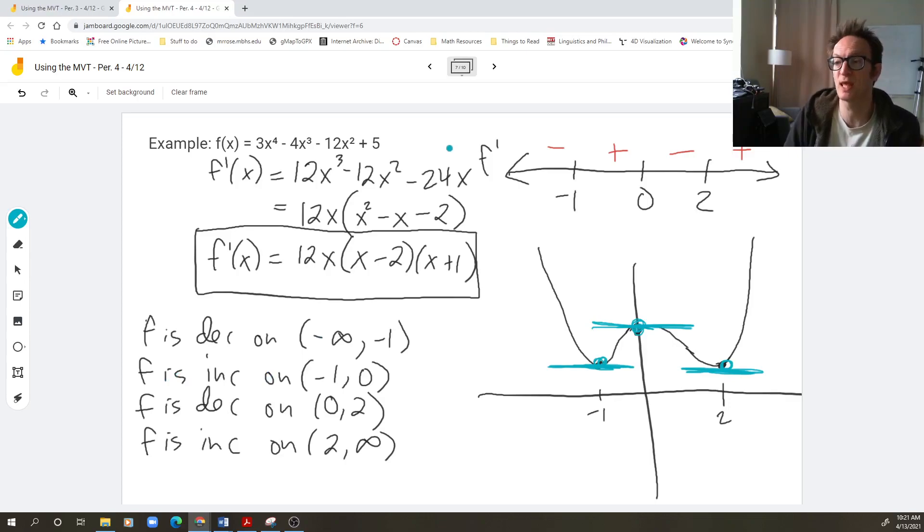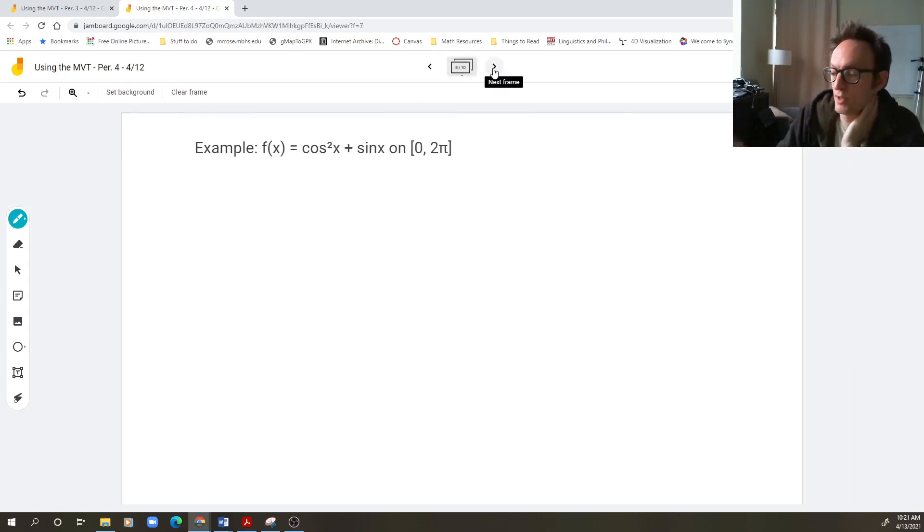The example that we gave is the simplest example possible, basically. It's a polynomial, and even when you take the derivative, it factors nicely. So it's easy to find out exactly on what intervals the derivative is positive and negative. So there are some harder examples. Here's a harder example, which is still totally doable.